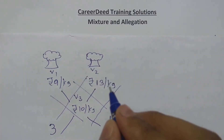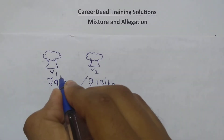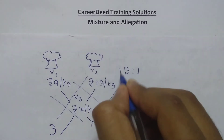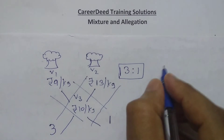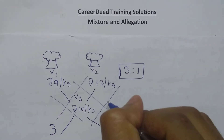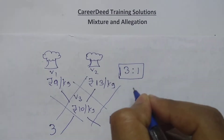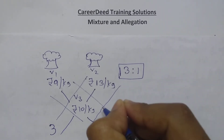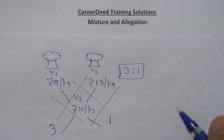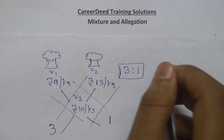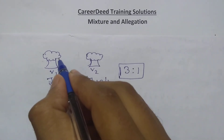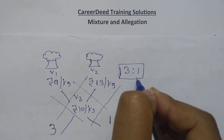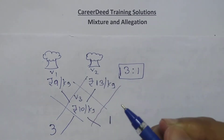So you have to mix variety 1 and variety 2 in the ratio 3 is to 1. That means if you take 3 kilograms from variety 1 and 1 kilogram from variety 2, you get 4 kilograms and the cost of each kilogram will be rupees 10 per kg. Even if you don't know the total quantity in variety 1 and variety 2, you can easily find the ratio by using the allegation rule.